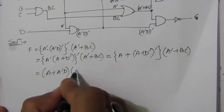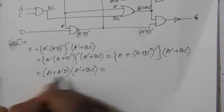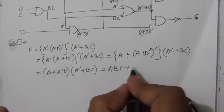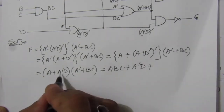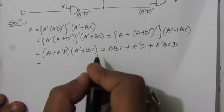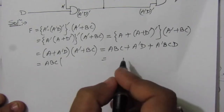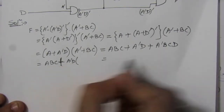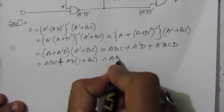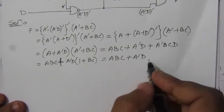Multiplying out: A · A-bar = 0, then A · B·C = A·B·C; plus A-bar · A-bar = A-bar, giving A-bar · D; plus A-bar · B·C · D = A-bar·B·C·D. Taking A-bar·D common from those last two terms: A·B·C + A-bar·D · (1 + B·C). Since 1 + B·C = 1, the simplified expression for F is: F = A·B·C + A-bar·D.